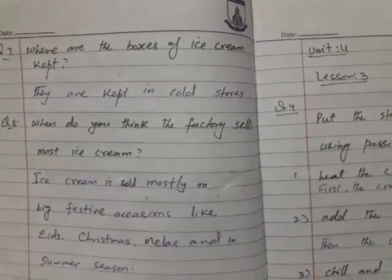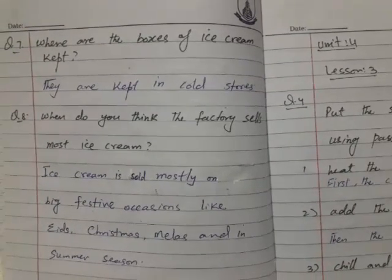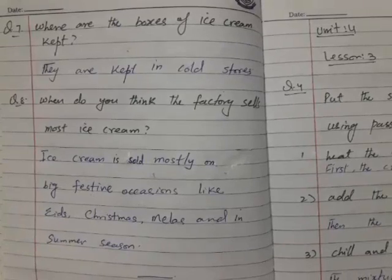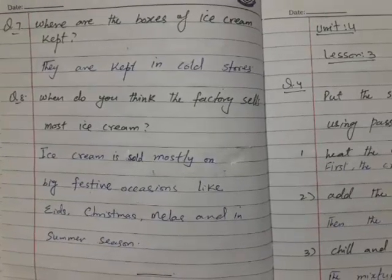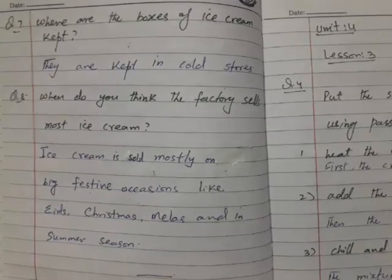Seventh question, where are the boxes of ice cream kept? They are kept in the cold stores. Question eight, when do you think the factory sells most ice cream? The answer is ice cream is sold mostly on big festive occasions like Eid, Christmas, melas, and summer season. This question is done.